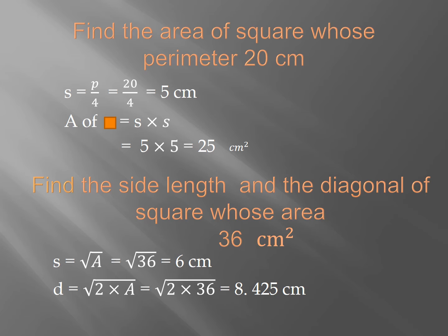Find the area of square whose perimeter is 20 cm. If we have the perimeter, to get the area you must first find the side length from the perimeter. Side equals perimeter divided by 4, so 20 over 4 equals 5 cm. Now you have the side, so area of square equals side times side, equal 5 times 5 equals 25 cm².